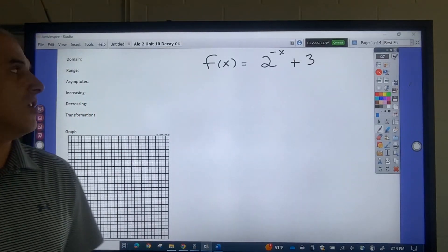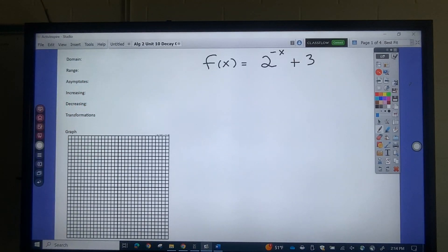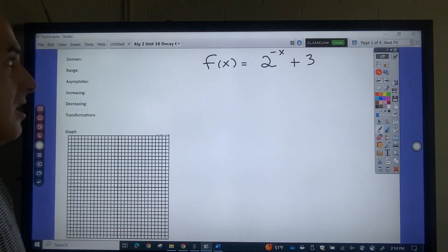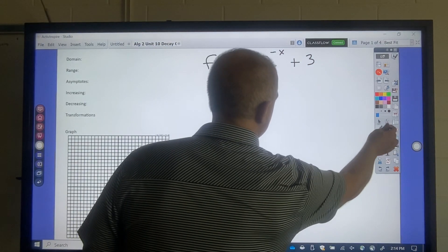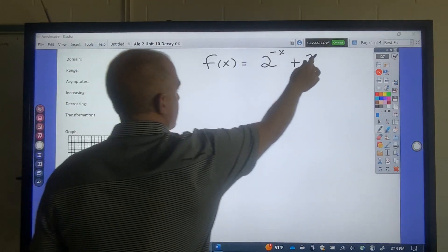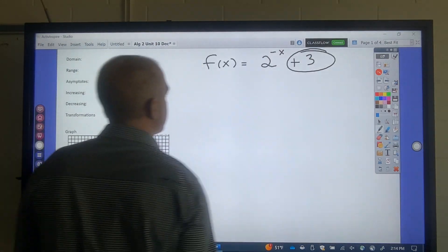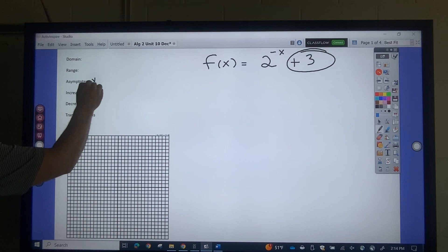Okay, this is going to be a short video on exponential decay. So we start out, we want to find the horizontal asymptote. We do that. It's just going to be y equals 3 for the horizontal asymptote.